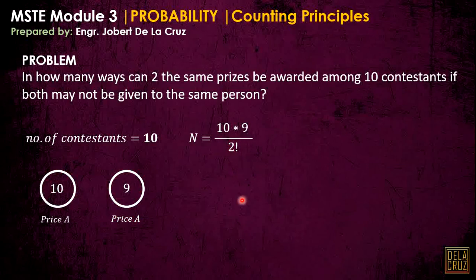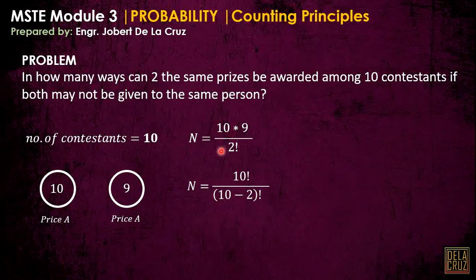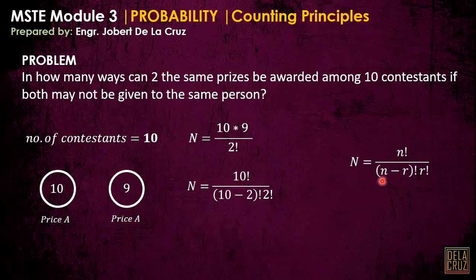Ten times nine can be rewritten as ten factorial over (ten minus two) factorial — that is the permutation part from before — but now we divide by two factorial since the two prizes are identical. This gives us the combination formula: n factorial divided by (n minus r) factorial times r factorial, written as nCr.